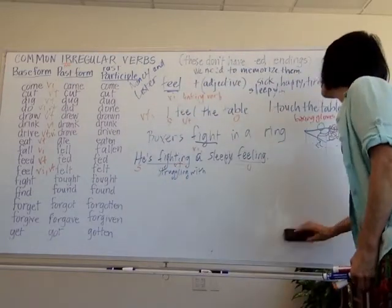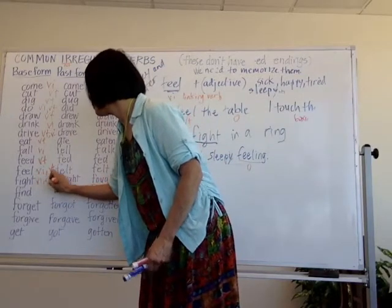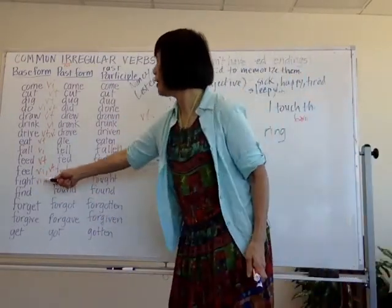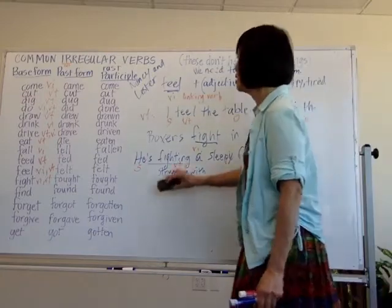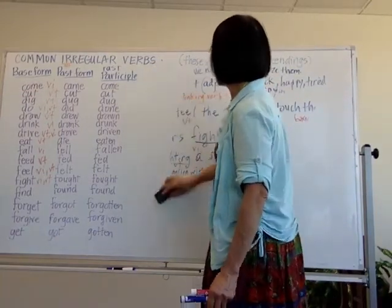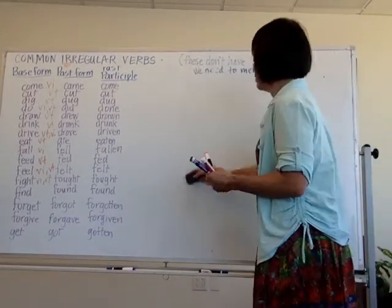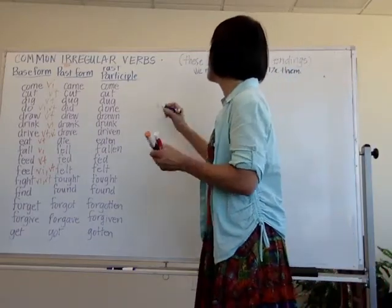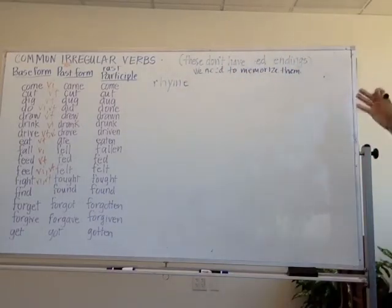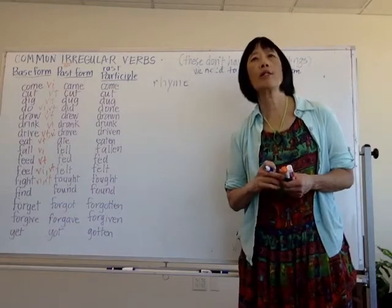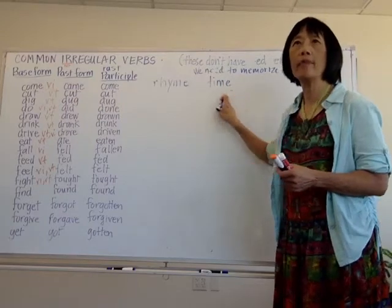So 'fight' can be both intransitive and transitive. The past tense is 'fought.' Fight, fought. What does 'fought' rhyme with? Let's talk about rhyming — this is an important word. Rhyme is spelled R-H-Y-M-E. The word 'time' rhymes with 'rhyme' because they share the same ending sound. What other word rhymes with 'fought'?